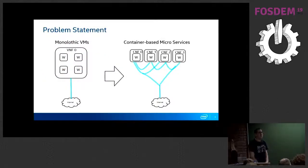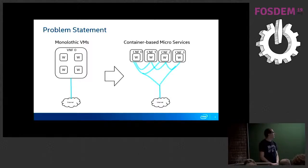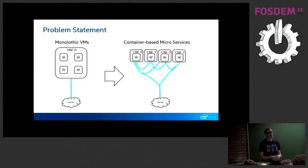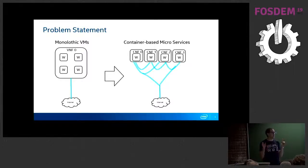So in terms of the problem statement we've been looking at, given that this is an SDN room, I expect most people are familiar to some degree with SDN and in the comms world with NFV — network function virtualization — which is very much a move away from discrete appliances towards more virtualized infrastructure where you've got VMs deployed on COTS hardware rather than custom boxes. But looking beyond that, we then see further trends towards containerization in this cloud-native style of deployment.